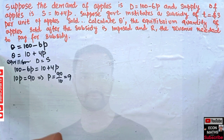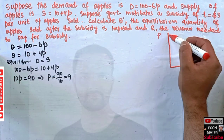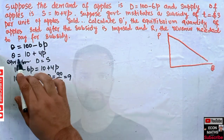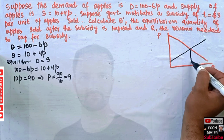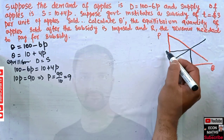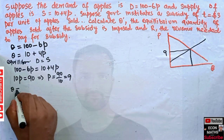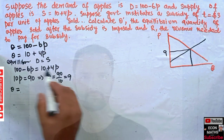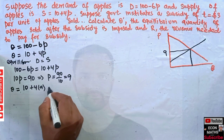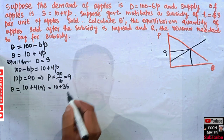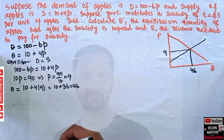On the graph with quantity on the x-axis and price on the y-axis, the demand function has an intercept of 100 and the supply function is upward sloping with intercept at 10. At their intersection the equilibrium price is 9. To find the equilibrium quantity before the subsidy, we substitute P = 9 into the supply function: Q = 10 + 4(9) = 10 + 36 = 46. So the pre-subsidy equilibrium is Q = 46 and P = 9.